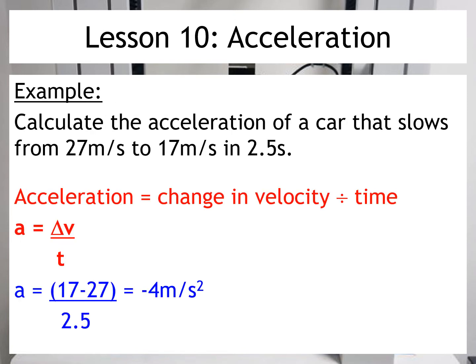So let's have a look at a second example. Here I'm asked to calculate the acceleration of a car that slows down from 27 metres per second to 17 metres per second in 2.5 seconds. So here's our key data then. That's our initial or starting velocity. This is our final velocity and this is the time taken.